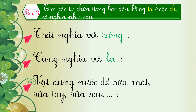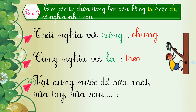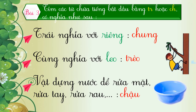Chúng ta cùng xem mình tìm từ có đúng không. Trái nghĩa với 'riêng' là 'chung'. Cùng nghĩa với 'leo' là 'trèo'. Vật đựng nước để rửa mặt, rửa tay, rửa râu là 'chậu'. Như vậy, các em đã biết phân biệt được âm đầu 'ch' hay 'tr' và tìm đúng từ theo nghĩa đã cho. Những bạn nào tìm chưa đúng thì nhớ sửa lại bài của mình.